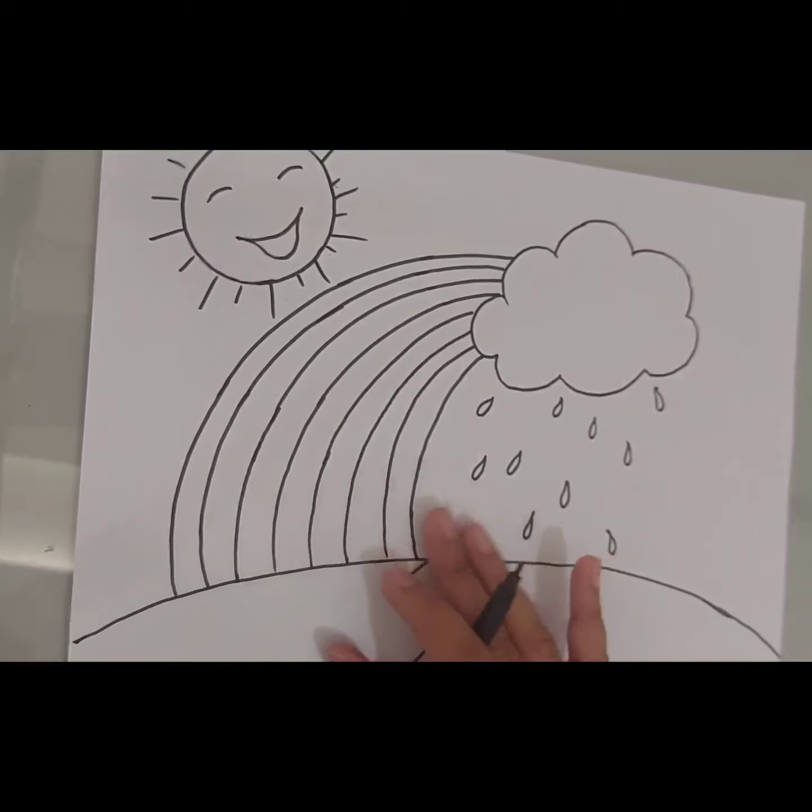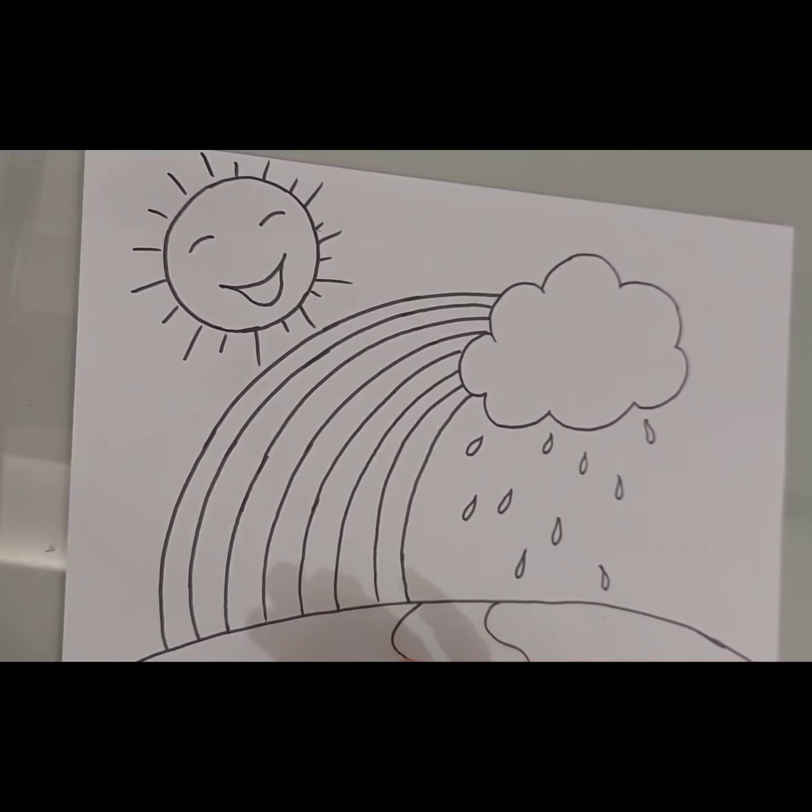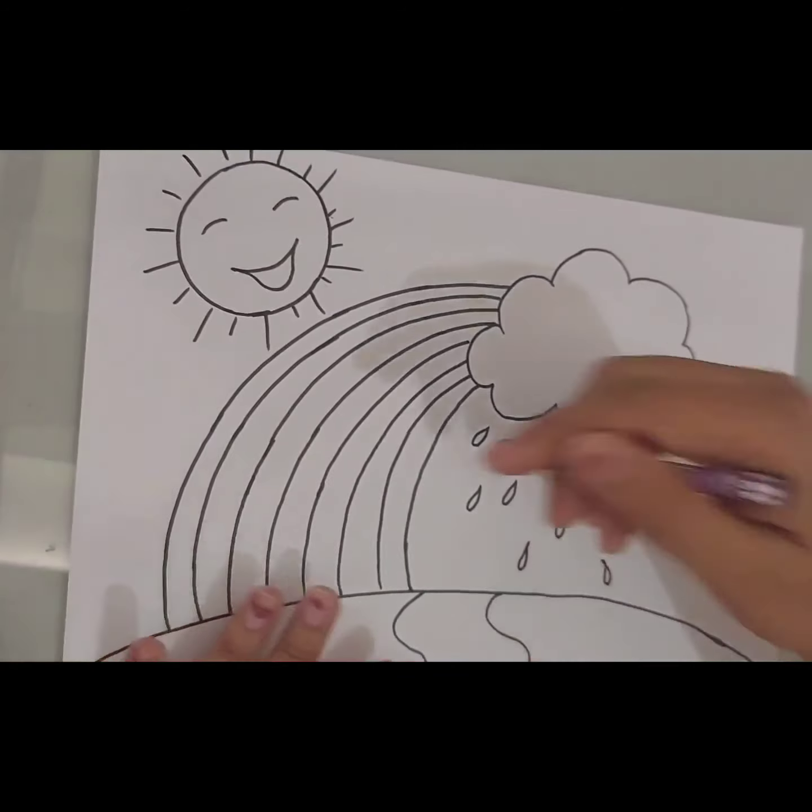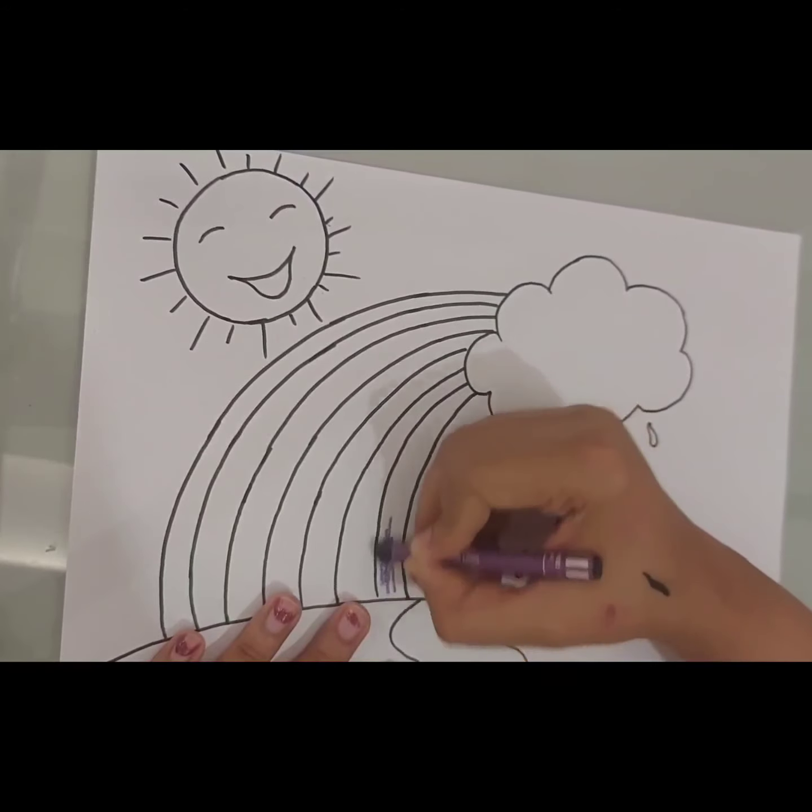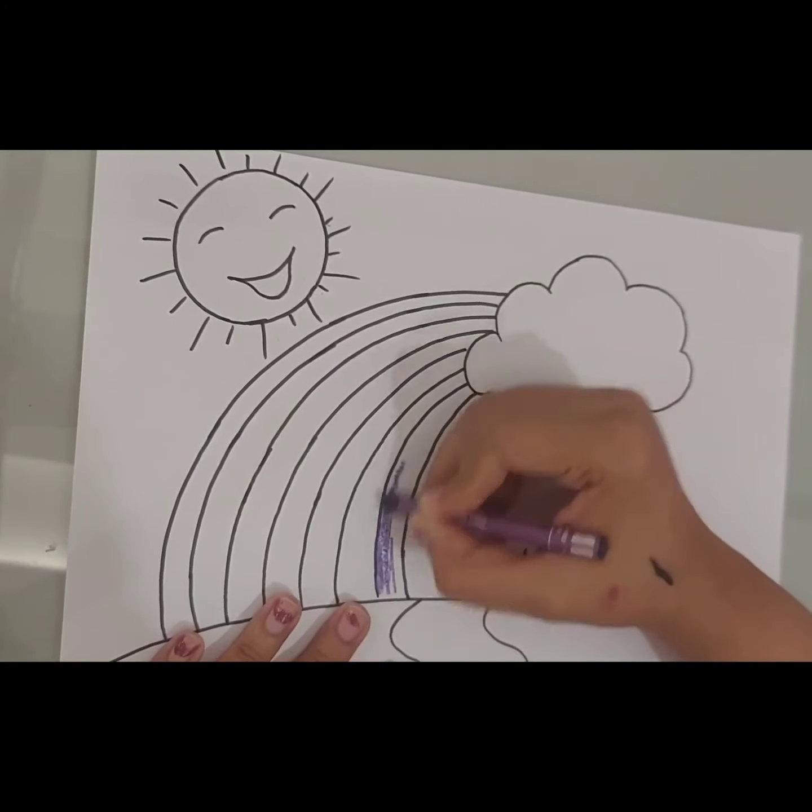Okay, now start coloring it. Rainbow has seven colors, so we will do seven colors in the rainbow first. First color of the rainbow is violet, so color it with violet color.